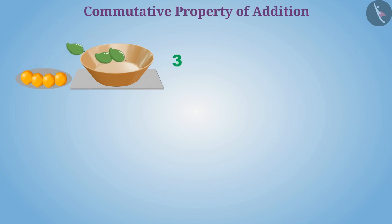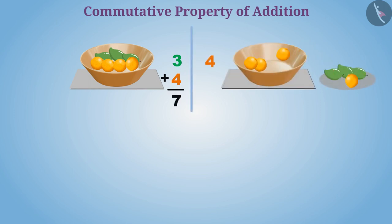If you keep three fruits in the basket and add four more fruits to them, then there will be seven total fruits. In the same way, if you keep four fruits and add three more fruits to them, then also the sum will be the same, that is seven.